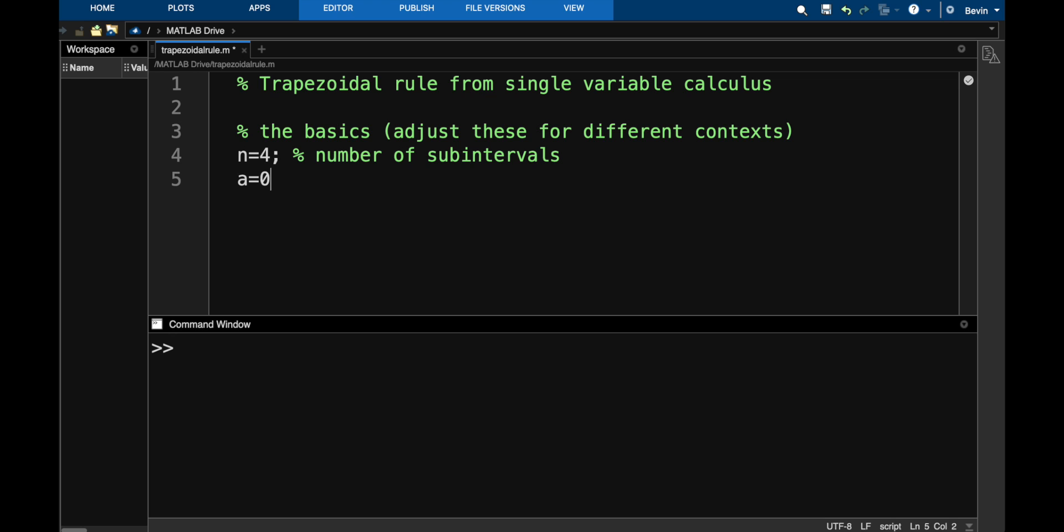And then let's do our domain. So how about A is 0 and B is 2. We'll just start with that. So this is the left point of the domain. And this is the right point. So you just adjust those as needed.